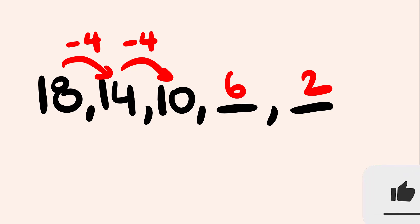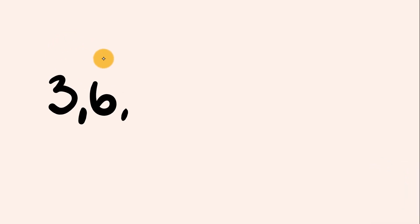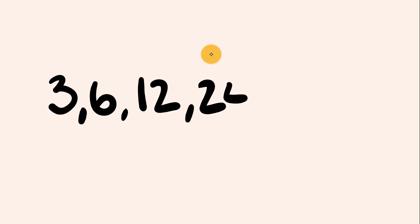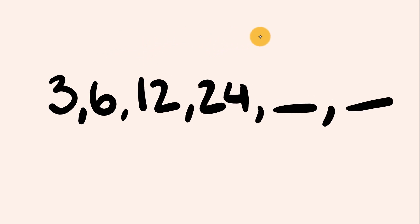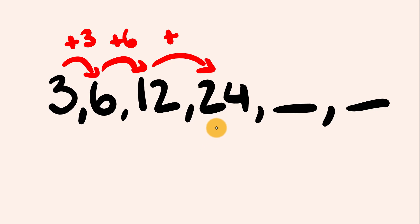So those are arithmetic sequences. Let's have a look at another type. We start with a 3, next we have a 6, then a 12, then 24. Looking at the differences — from 3 to 6 we're going up by 3, and from 12 to 24 we're going up by 12. We're not going up by a regular amount, so the next thing to check is whether it's a geometric sequence — a sequence where you're multiplying by an amount.